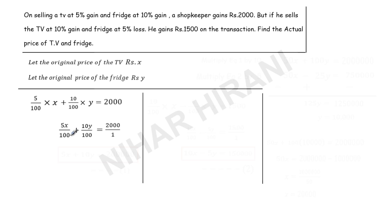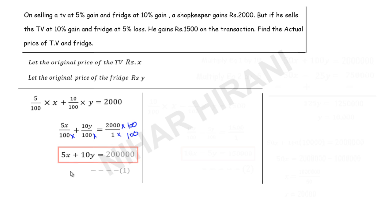Now I will take the LCM of the whole equation, which is 100. Multiplying through by 100 removes the denominators, so we get 5x plus 10y equals 2000 times 100, which is 20,000. This is Equation 1.